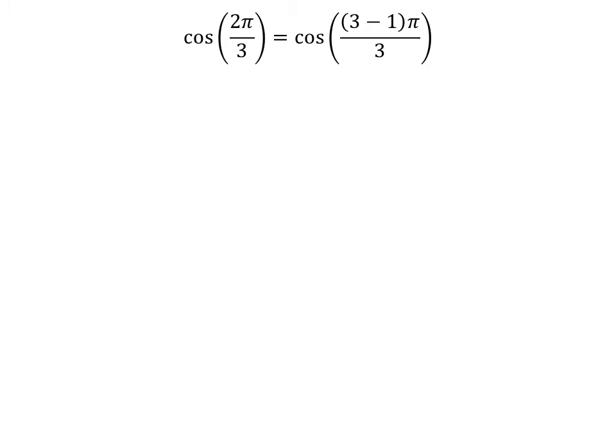We know 3 minus 1 is equal to 2. So cosine of 2 times pi upon 3 is equal to cosine of 3 minus 1 times pi upon 3.